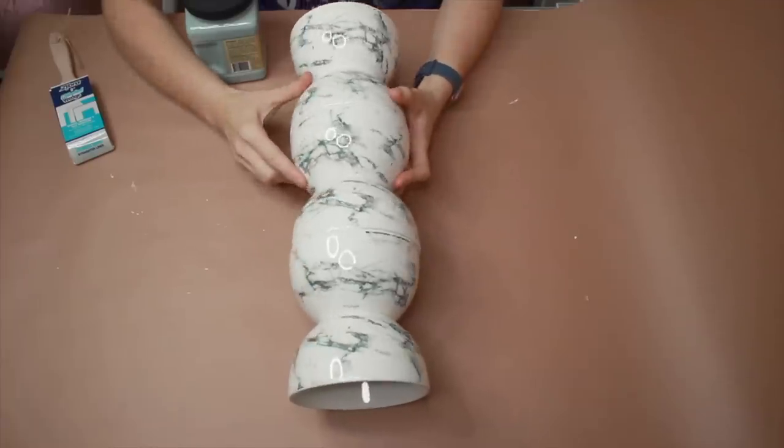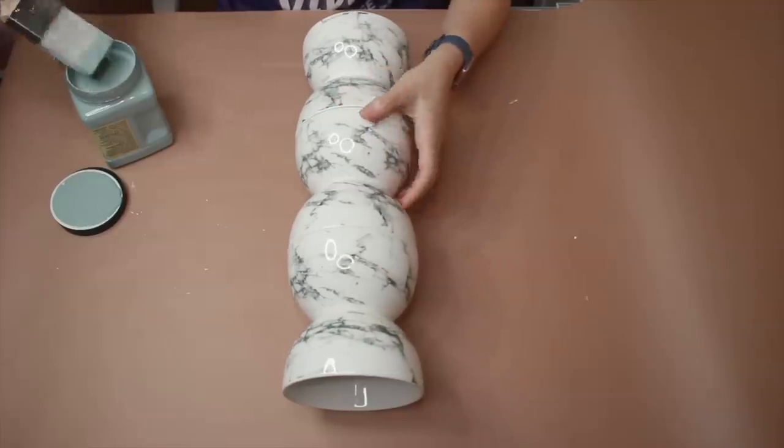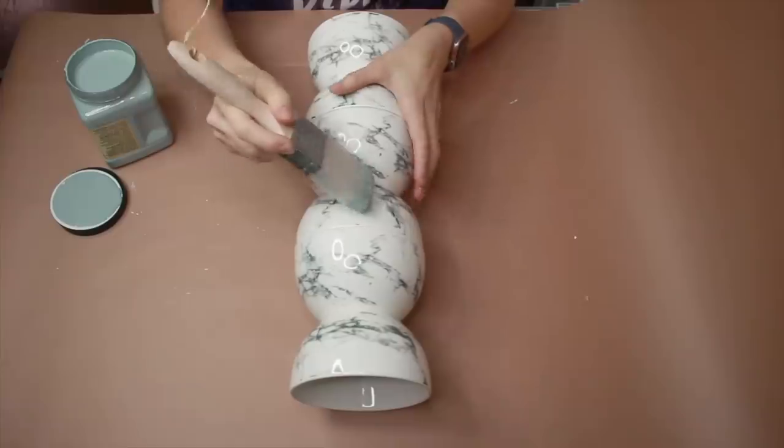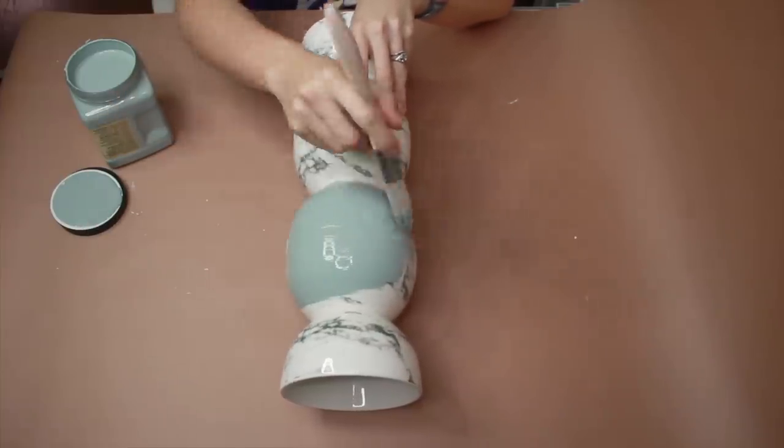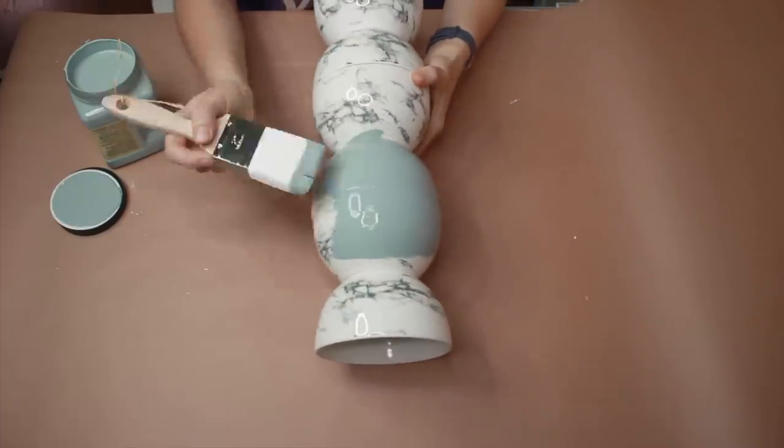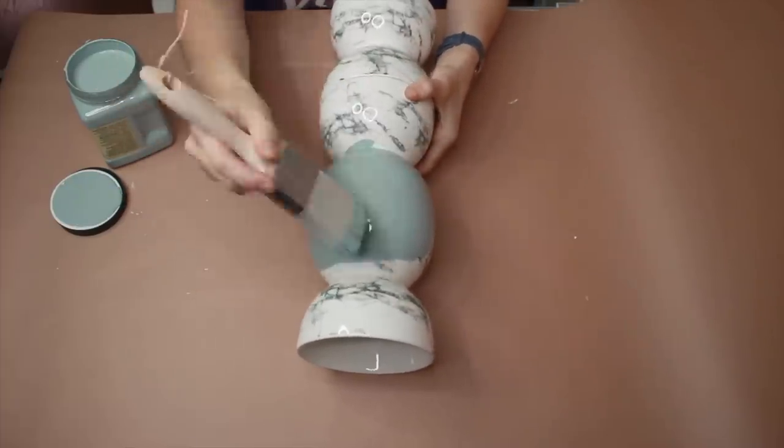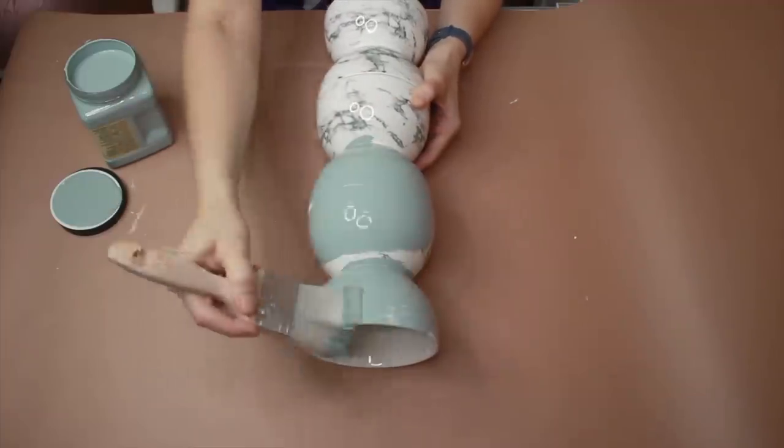Alright, so we've let this dry overnight. We're back to add, or to go to our next step, which will be painting. I am using Dixie Belle Vintage Duck Egg Chalk Paint. I got the big one. I usually use this kind of paint for furniture projects, but I thought this color would be really pretty for this project. But you know, you can always choose whatever color you want to use.